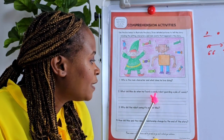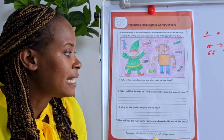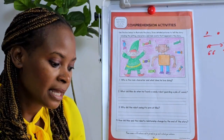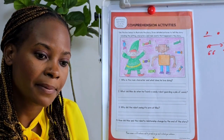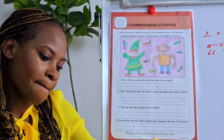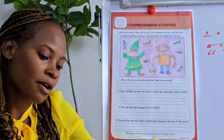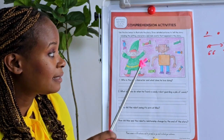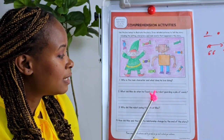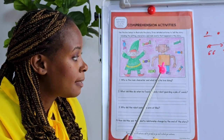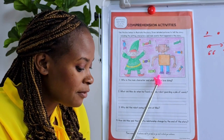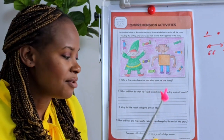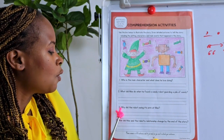So what did Max do when he found a candy robot guarding a pile of candy? He played a prank on it — Max played a prank on the robot by tickling its feet with a sugar stick. What did Max do? He played a prank on the robot by using a sugar stick on its feet. Did the robot like that? No, he didn't.